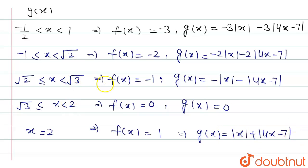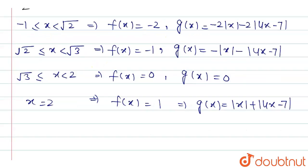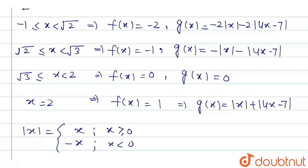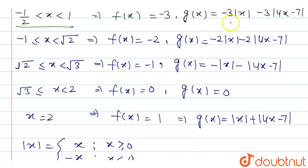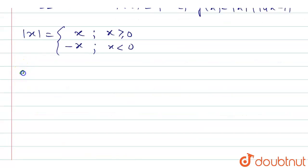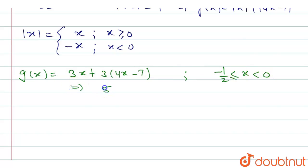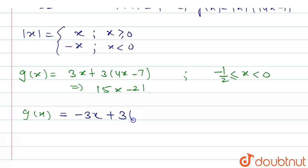Since x ≥ 0 for x ∈ [0, 2], |x| = x, and |4x-7| = 7-4x throughout. For x ∈ [-1/2, 0): g(x) = -3(-x) - 3(7-4x) = 3x - 21 + 12x = 15x - 21. For x ∈ [0, 1): g(x) = -3(x) - 3(7-4x) = -3x - 21 + 12x = 9x - 21.